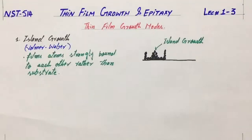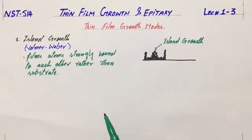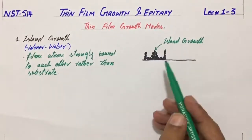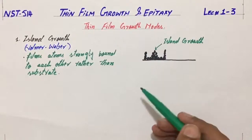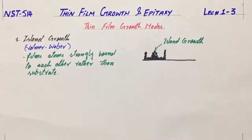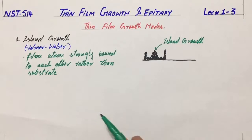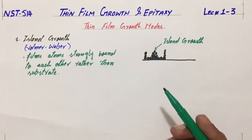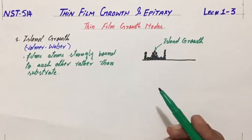In island growth or Volmer-Weber growth mode, small clusters are nucleated directly on the substrate and then grow into high islands. The condensed phase atoms or molecules of the deposit are more strongly bound to each other than to the substrate, so clustering occurs on the substrate surface rather than uniform thin film deposition.